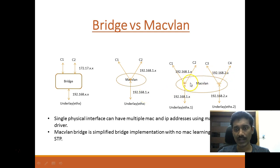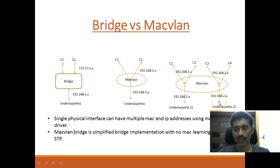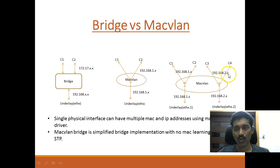This is an extension of the previous case. Here we have two sub-interfaces in the underlay physical network and two containers which are part of these sub-interfaces. That is why some containers are in the .1.x IP address range and others are in the .2.x subnet, which is part of this other sub-interface.